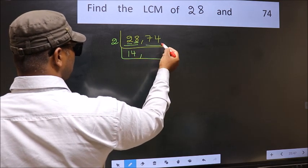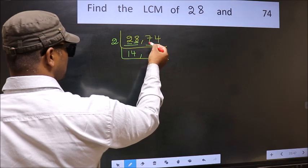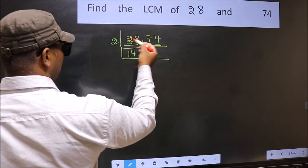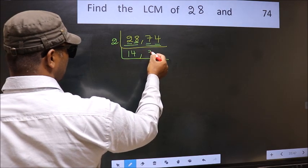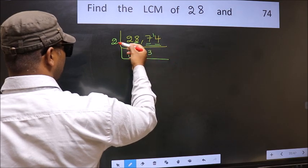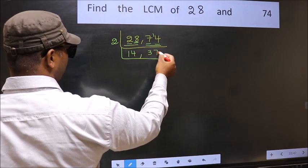Now the other number 74, last digit 4, even, so this is divisible by 2. First number 7, a number close to 7 in 2 table is 2, 3, 6. 7 minus 6, 1, 1 carried forward 14, when do we get 14 in 2 table? 2, 7s, 14.